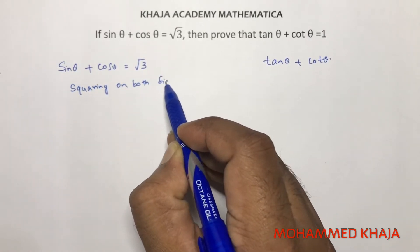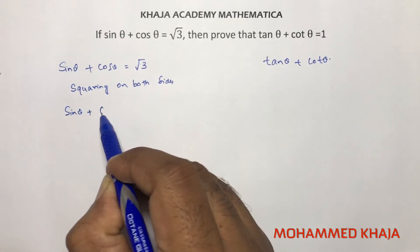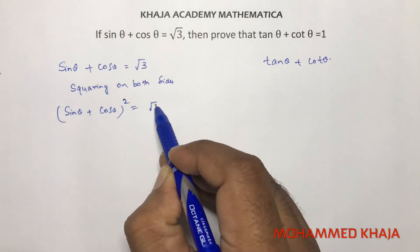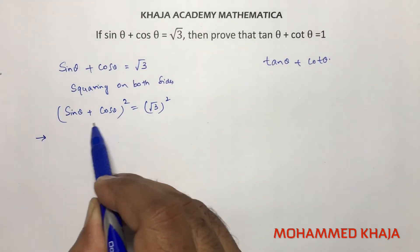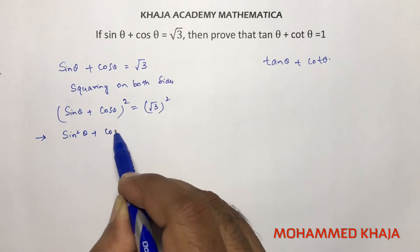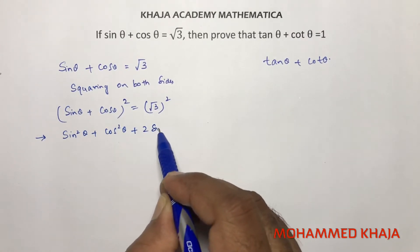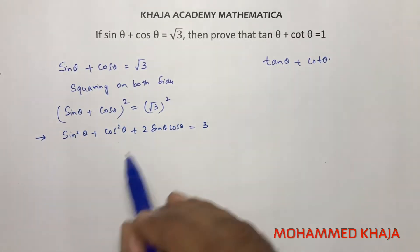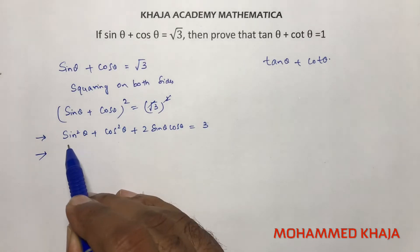First, do the squaring on both sides: sine theta plus cos theta whole square equals root 3 whole square. This is in the form of (a + b) whole square, so we expand as a square plus b square plus 2ab, giving us 2 sine theta cos theta equals 3.